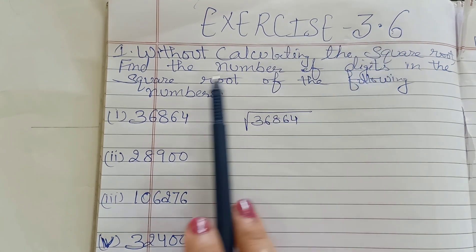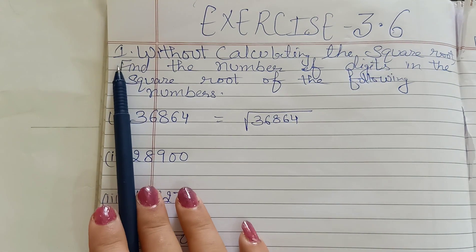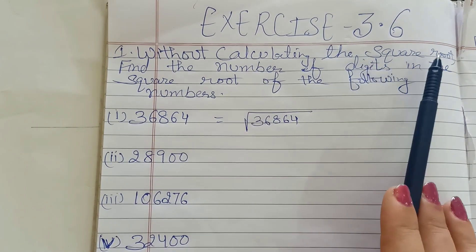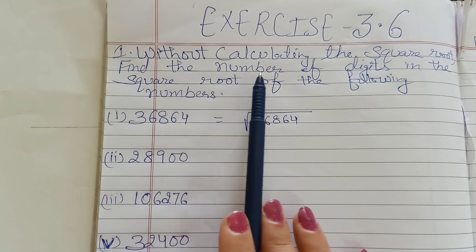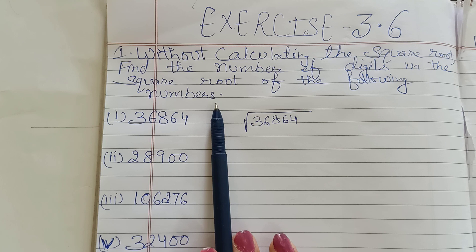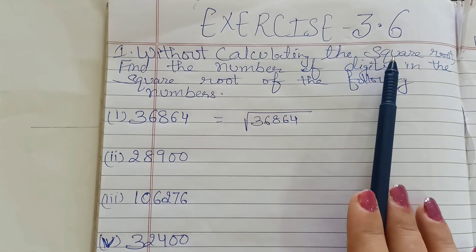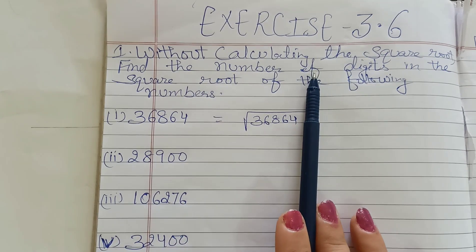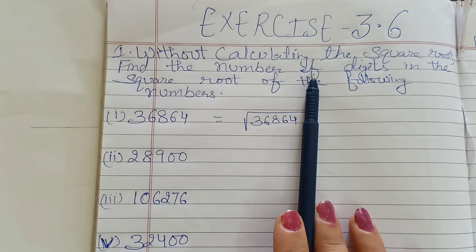Exercise 3.6, question number 1. What this question is saying? It is saying that without calculating the square root, find the number of digits in the square root of the following numbers. Always understand the meaning of the question. Without calculating the square root — bina square root find out kiye huye — find the number of digits.